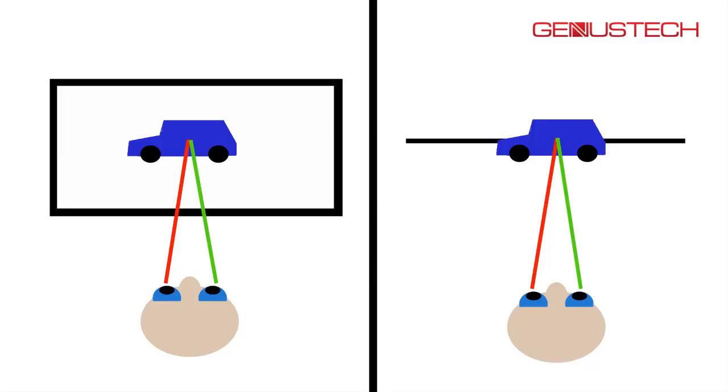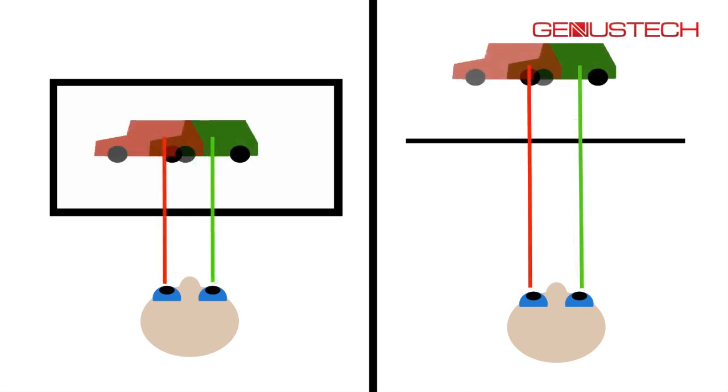When you are looking at something a long way away, your eyes are pretty much parallel — they're looking straight at that distant object. So if we want the car to appear to be behind the screen, we want our eyes to be looking parallel or straight. What we have to do is separate apart those left and right images by a distance. If we want it to appear to be at infinity, that distance is roughly equal to the distance between our eyes — about 65 millimetres.